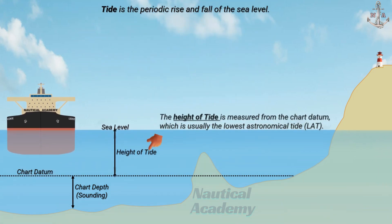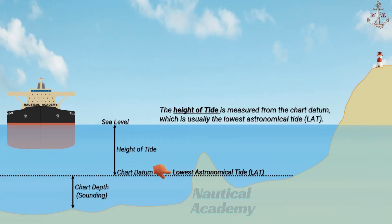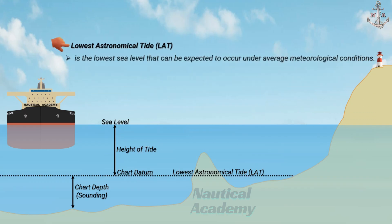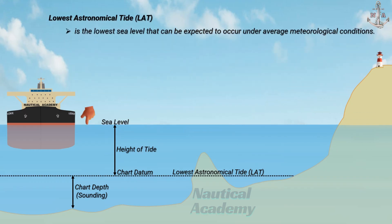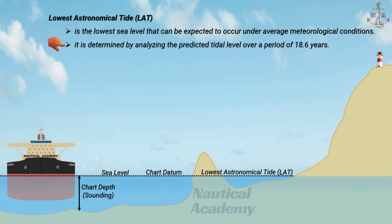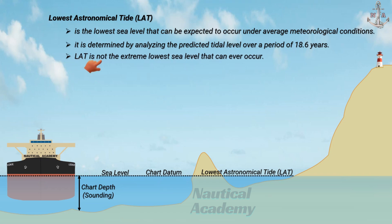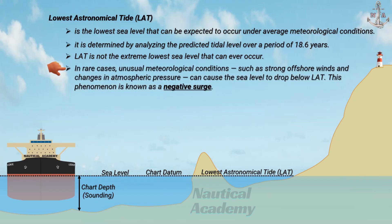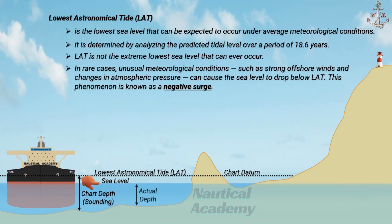The height of tide is measured from the chart datum, which is usually the lowest astronomical tide. Lowest astronomical tide is the lowest sea level that can be expected to occur under average meteorological conditions, determined by analyzing the predicted tidal level over a period of 18.6 years. However, LAT is not the extreme lowest sea level that can ever occur. In rare cases, unusual meteorological conditions such as strong offshore winds and changes in atmospheric pressure can cause the sea level to drop below LAT — a phenomenon known as a negative surge.